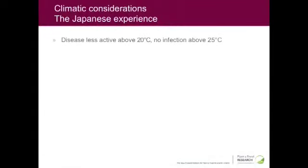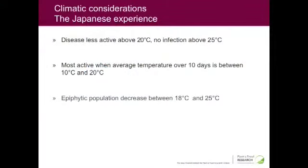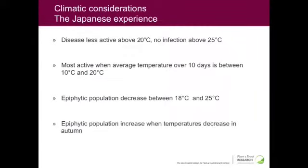I'll go back to the Japanese experience. The Japanese were actually the first to have PSA, and they did a lot of work on epidemiology. They concluded that the disease was less active above 20°C, and above 25°C you didn't get any infection. The disease is most active when the average temperature over a 10-day period is between 10 and 20°C. The epiphytic population, which is your inoculum, decreases when temperature goes up, and increases in fall when temperature goes down. That matched very well with the model we had for Italy.